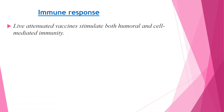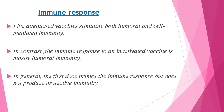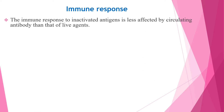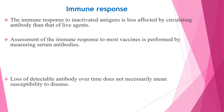When we look at the immune response, live attenuated vaccines stimulate both humoral and cell-mediated immunity. In contrast, the immune response to an inactivated vaccine is mostly humoral immunity. In general, the first dose primes the immune response but does not produce protective immunity. The immune response to inactivated antigens is less affected by circulating antibodies than that of live agents. Assessment of the immune response to most vaccines is performed by measuring serum antibodies.